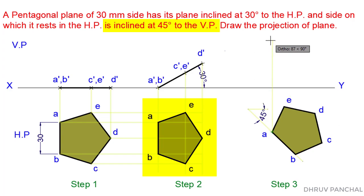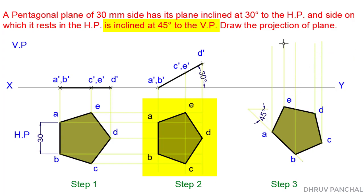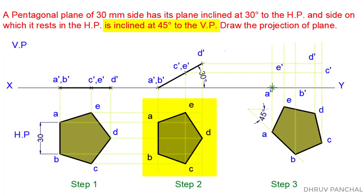Now, to draw the front view in Step 3, take projections of each point in the upper direction. Also, take the projection of the front view from Step 2 in the right direction. Locate points A', B', C', D', and E', and join them as shown. The front view and top view of Step 3 is our final answer for the given problem.